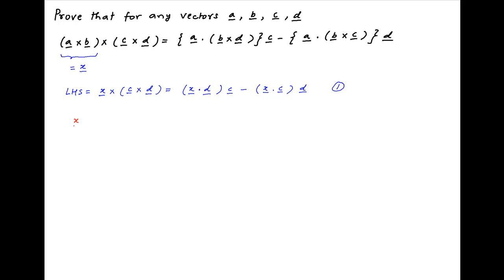Now we evaluate the dot product x dot d, substituting the value of x which is a cross b. This is equal to a cross b dot vector d, which is equal to the scalar triple product a dot b cross d.